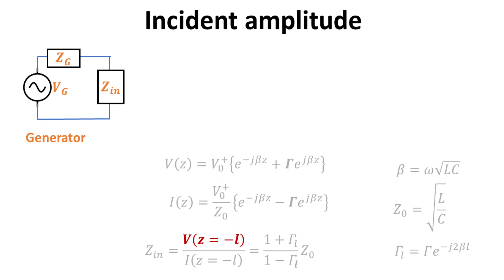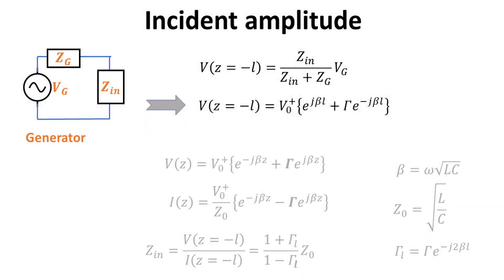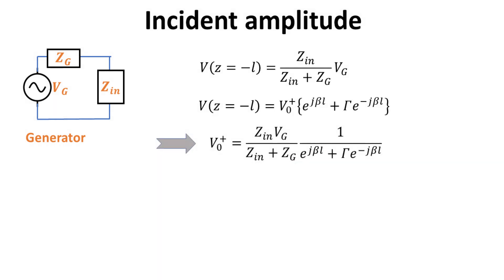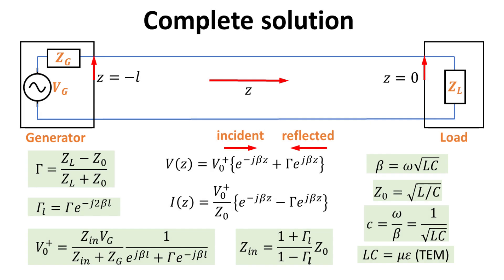Let's first determine an expression for V at Z equals minus L. Using the voltage divider rule, it allows us to write it in terms of the generator voltage V_G, with the input and generator impedances Z_in and Z_G. Writing down again the general expression for the voltage, connecting the two equations then allows us to write down an explicit expression for V0-plus in terms of the line parameters and the generator and load parameters. With this, we obtain the complete solutions for the lossless TEM transmission lines.